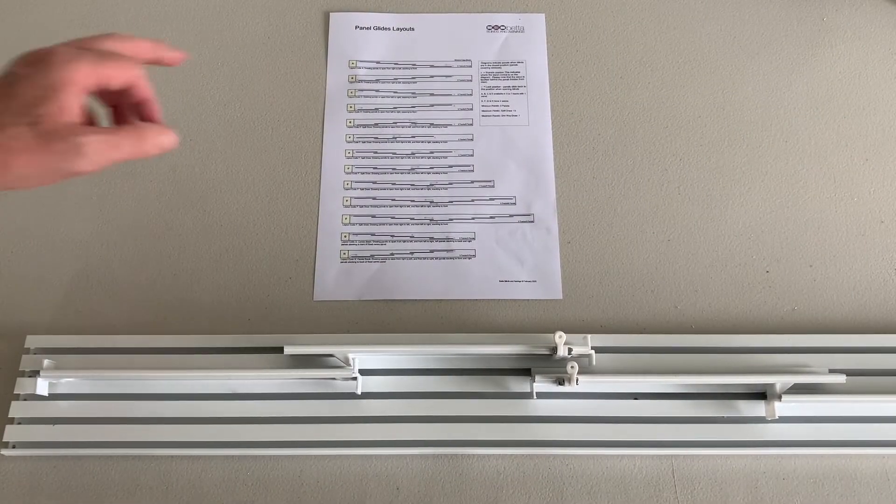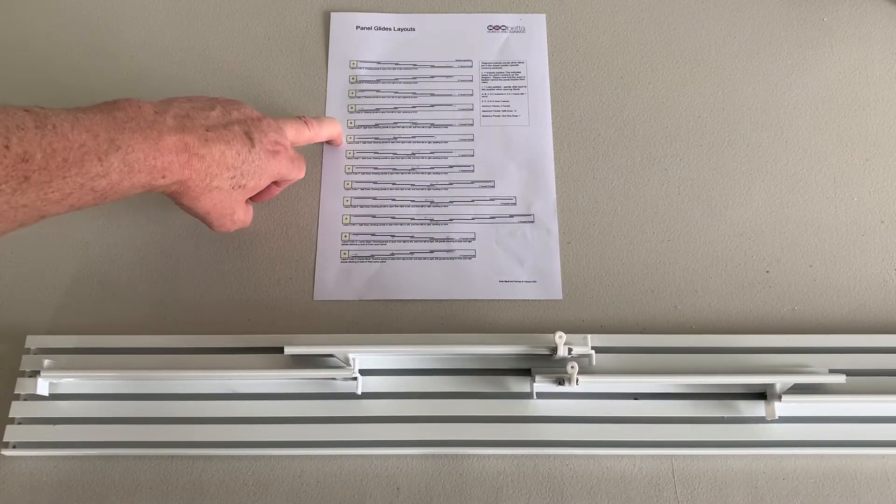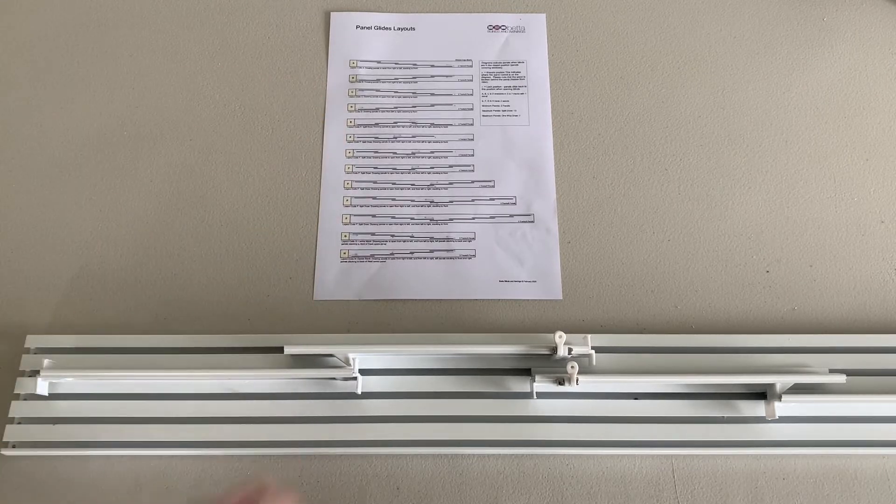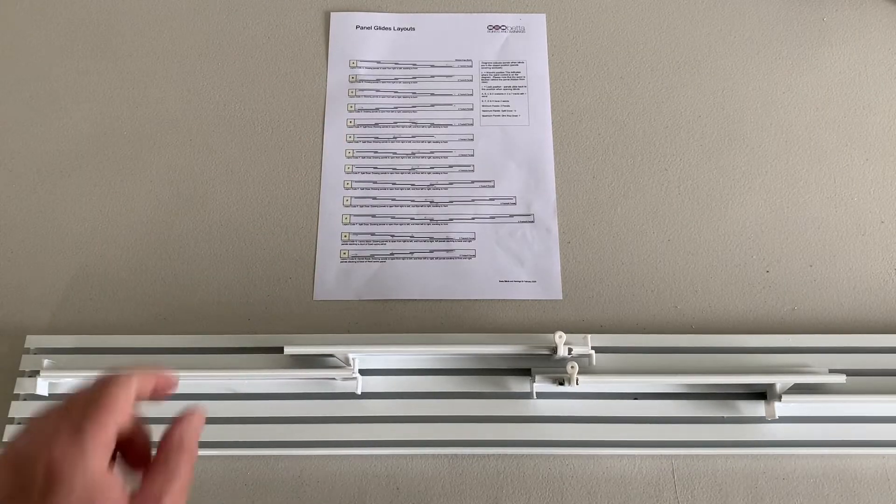So I'm setting up here for an F-code three track, four panels. I'm using a five track because I don't have any three tracks with me.